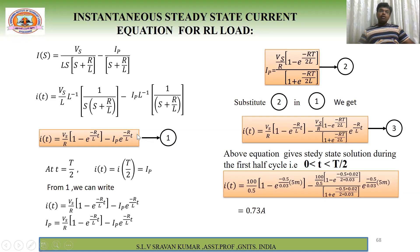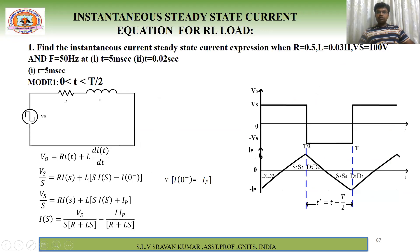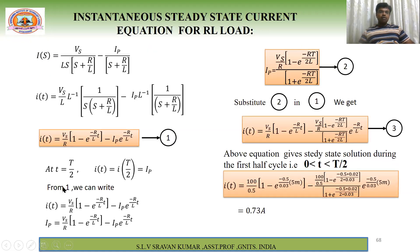At t = T/2, the current value equals Ip (by symmetry), giving: Ip = (Vs/R)·(1 − e^(−R·T/(2L))) / (1 + e^(−R·T/(2L))). Substituting this Ip back into the Mode 1 current equation gives the complete steady-state expression for 0 < t < T/2.